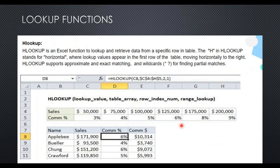Now let's move to HLOOKUP. VLOOKUP is clear — you searched vertically and moved right. HLOOKUP means you look for values horizontally and then move downwards. It's like writing a seven — search horizontally and then move vertically. VLOOKUP was like writing an L — search vertically and move right.